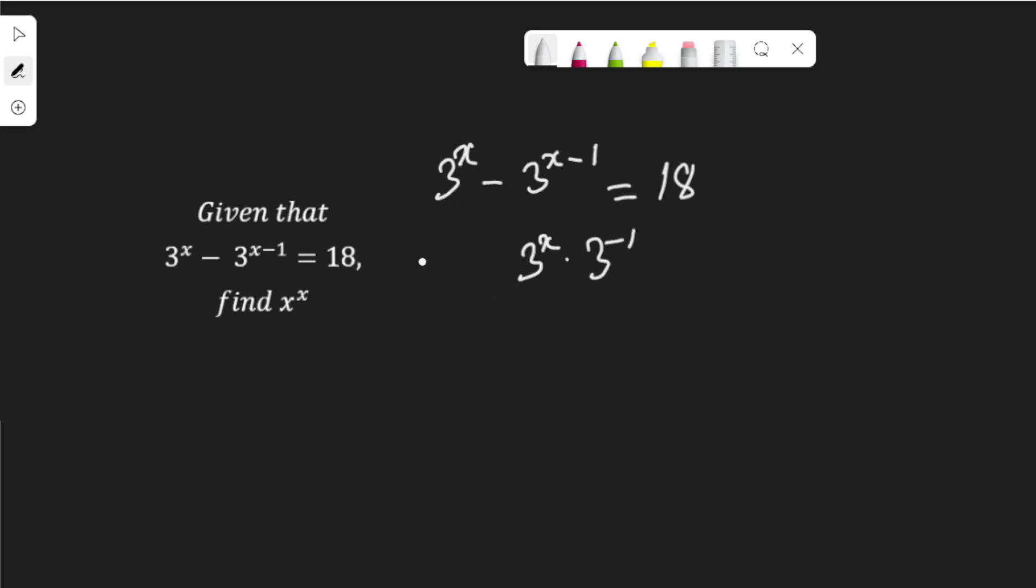Okay, then let me write it 3 to the power of x minus, then equal to 18. And what I apply here is the law. For example, if I have a to the power of x multiplied by a to the power of minus y, we know that is a to the power of x plus bracket negative y. Now we know that plus times minus is minus, which is a to the power of x minus y.